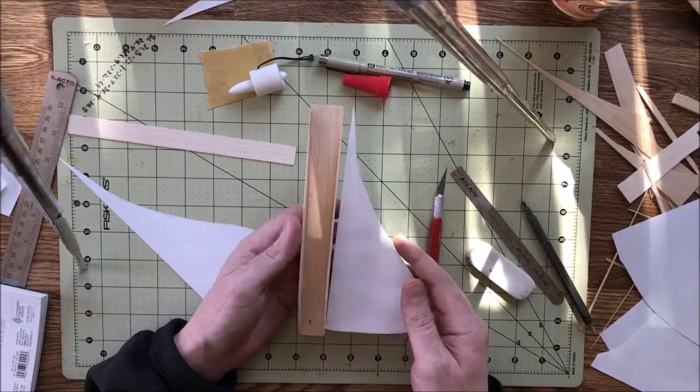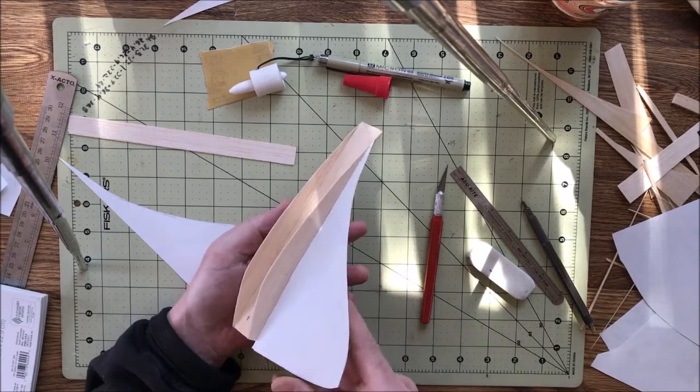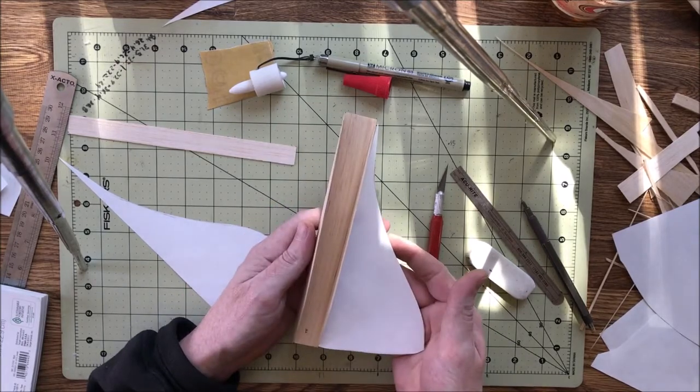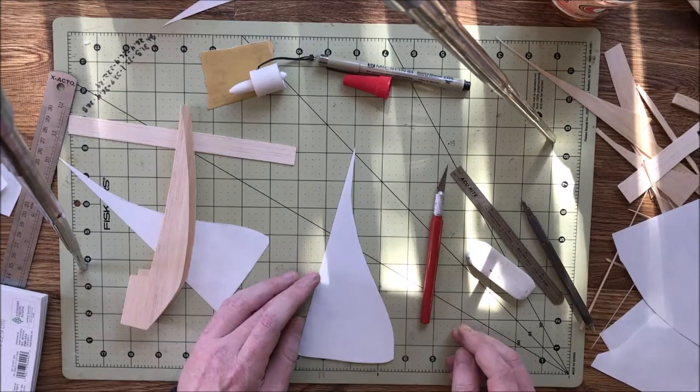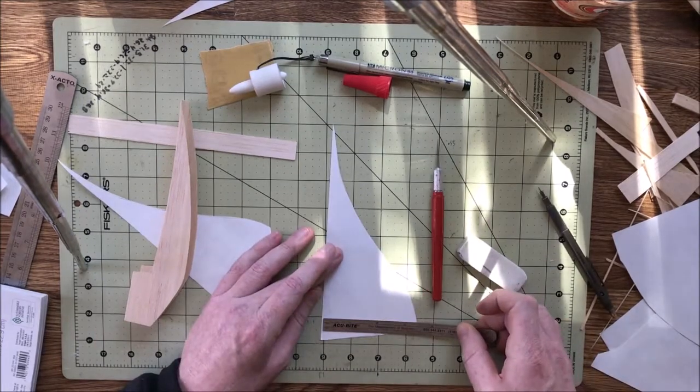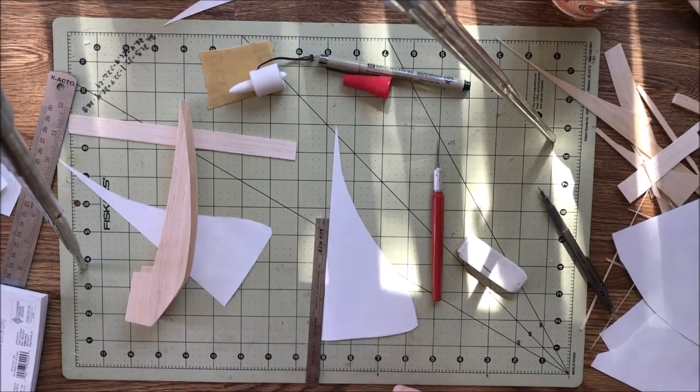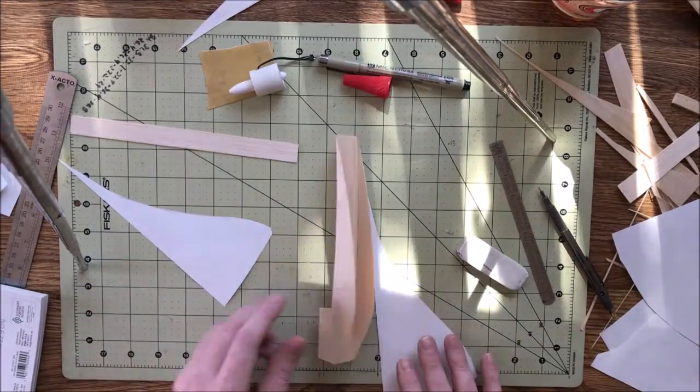If it's an indoor model, like a living room flyer, that's a different story, but that 1 gram per 1 square inch rule has worked for me on pretty much everything I've ever built. So it's a good starting point. If you want it to be able to fly slower, give yourself more wing area.